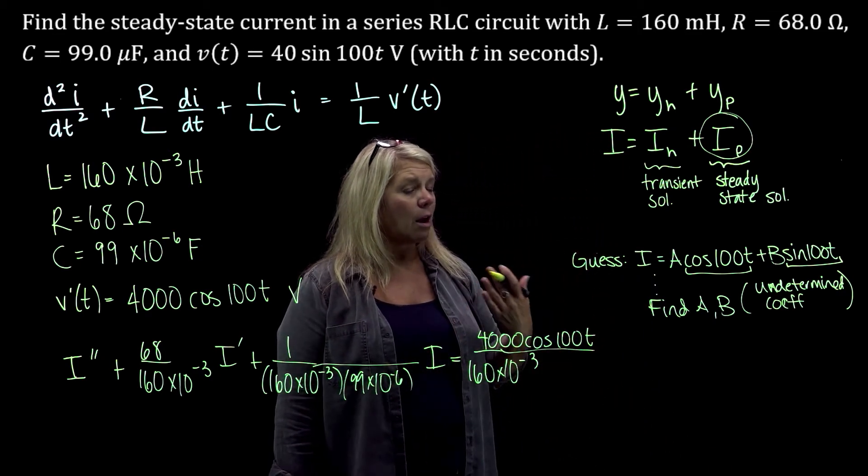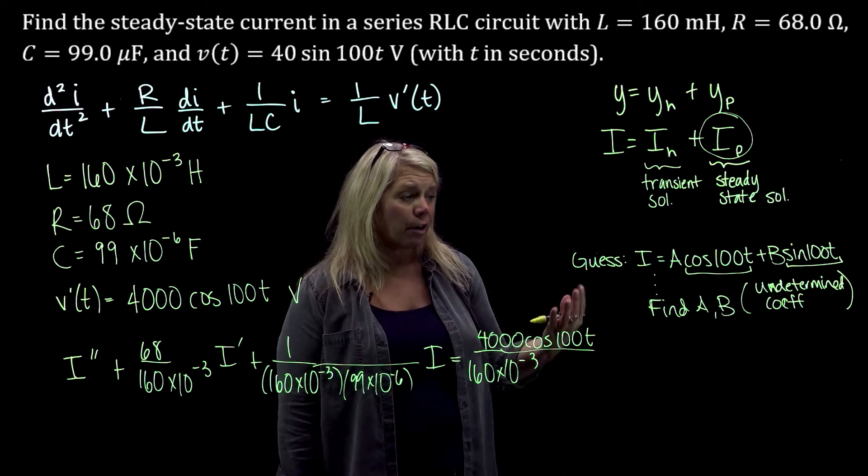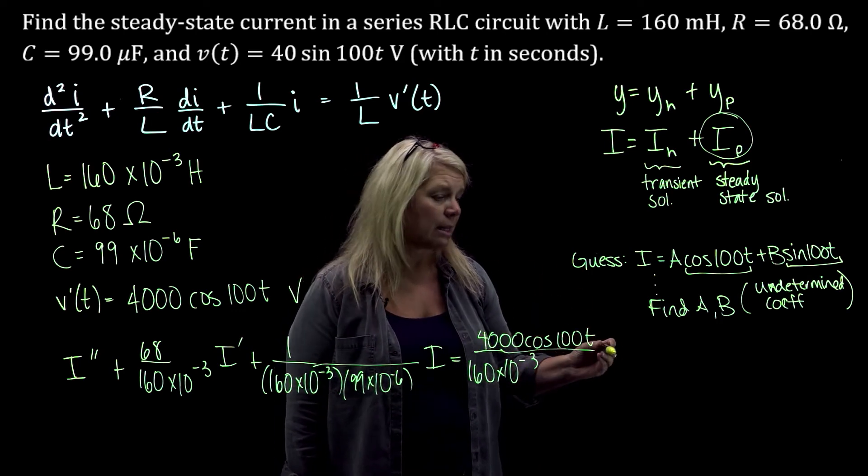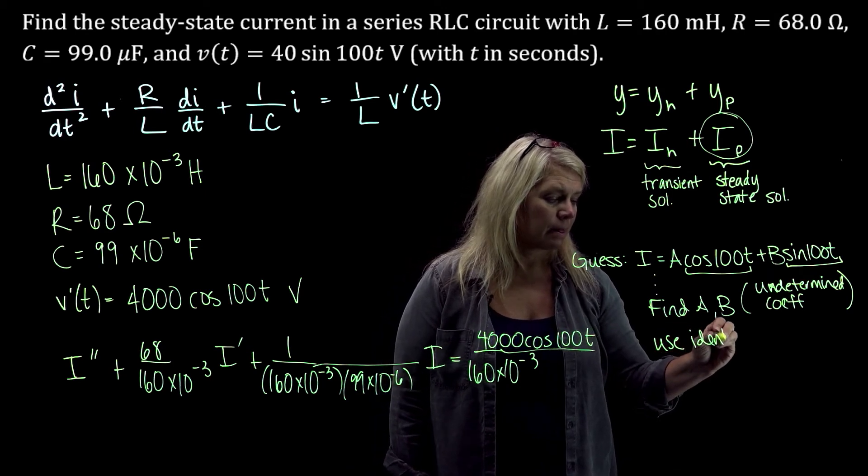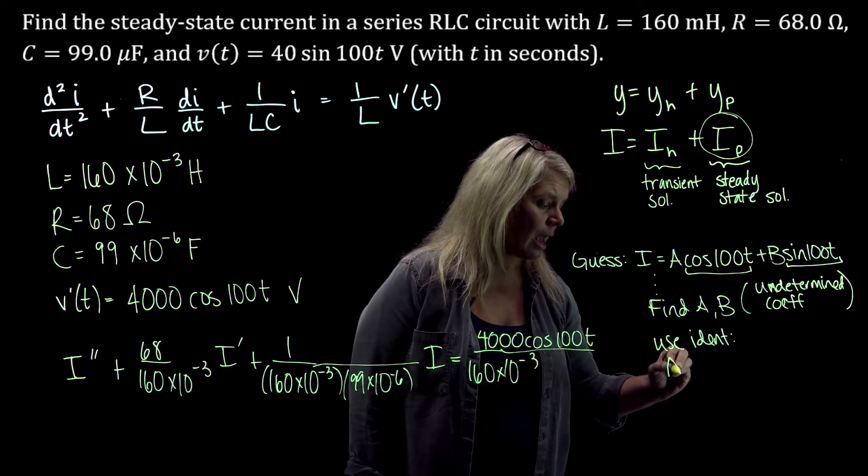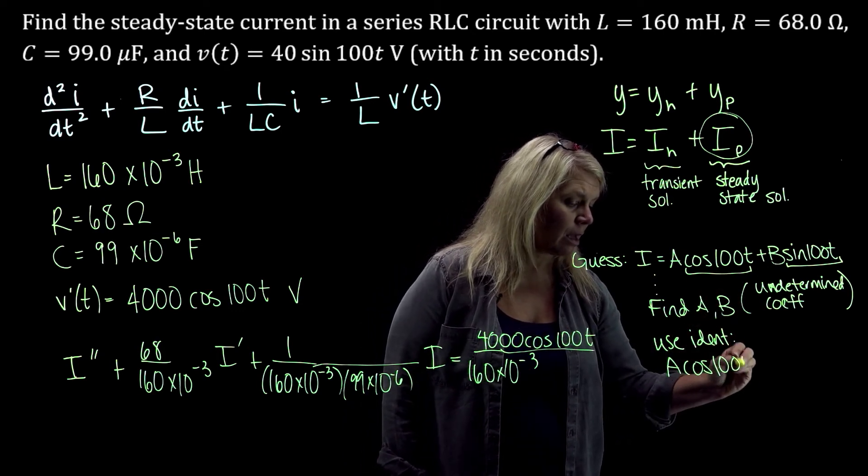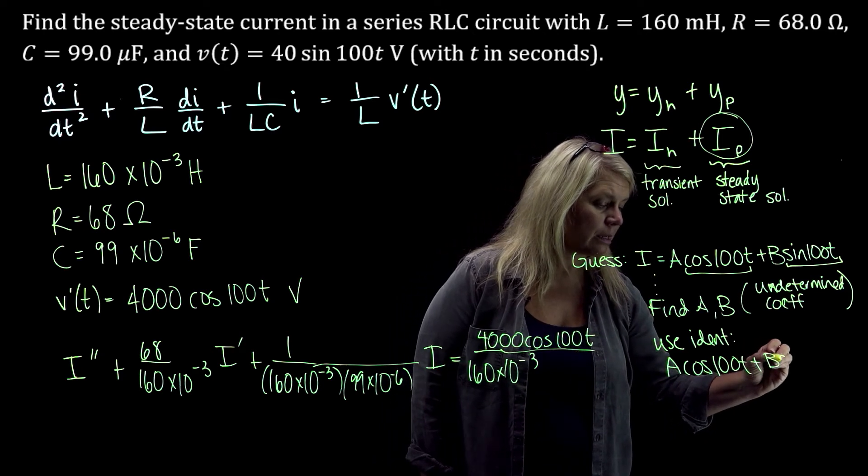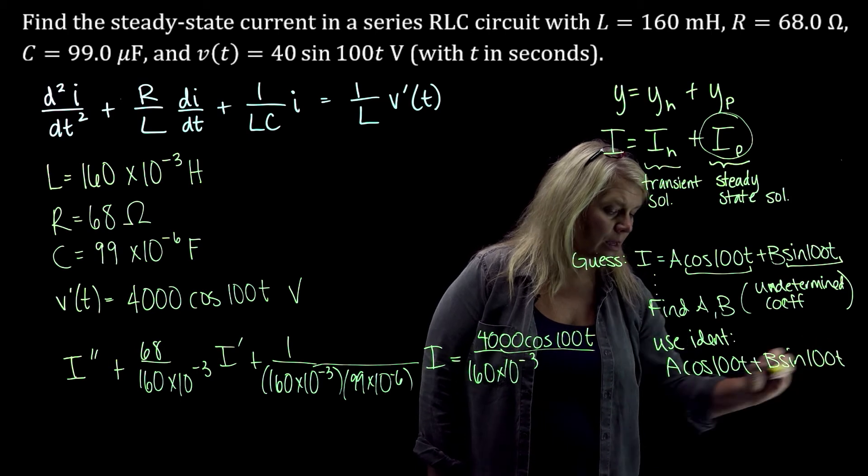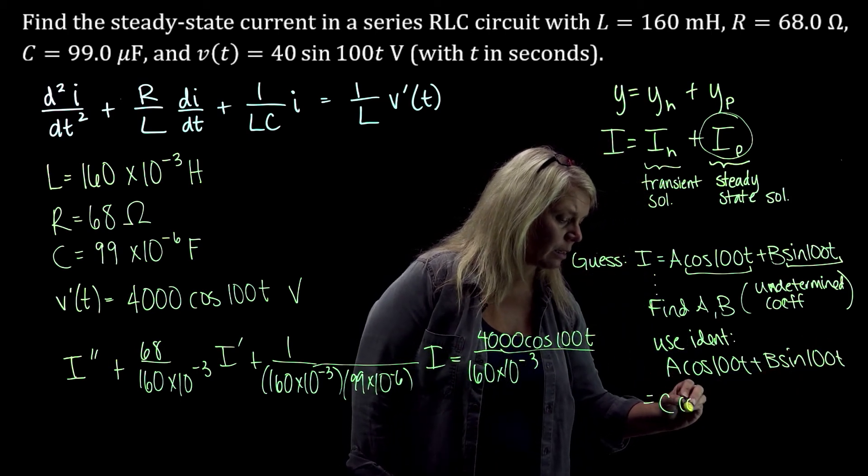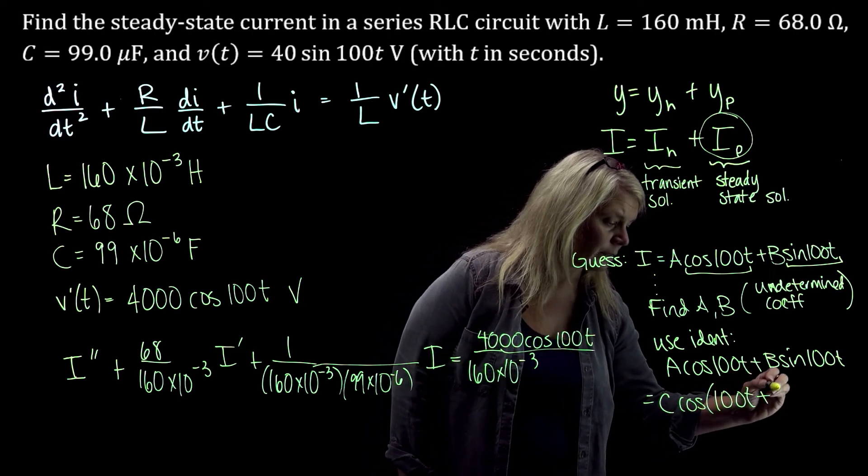Most of the time in the homework, in the online homework, they will then ask you to go ahead and convert that using that identity that we've talked about. So we're going to use the identity then that a cosine of omega t, here our omega is 100, plus b sine of omega t, omega is 100 on this one, is going to be c cosine of omega t plus phi.